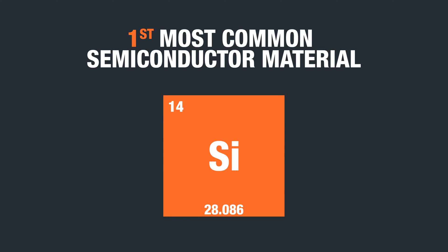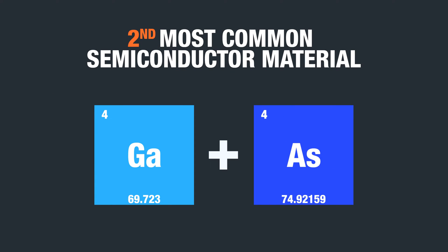Semiconductors are materials that are in between conductors and insulators when it comes to the ability to conduct electrical current, which explains the name. The most commonly used semiconductor material in the electronics industry is silicon. After that, it's a compound known as gallium arsenide.